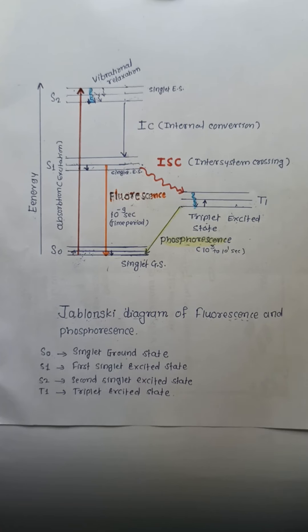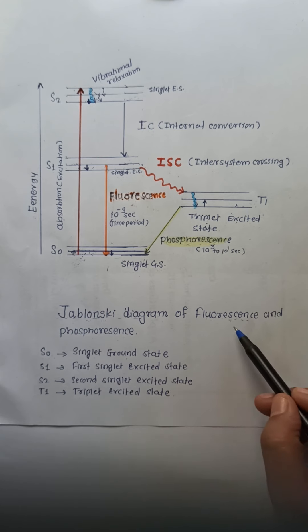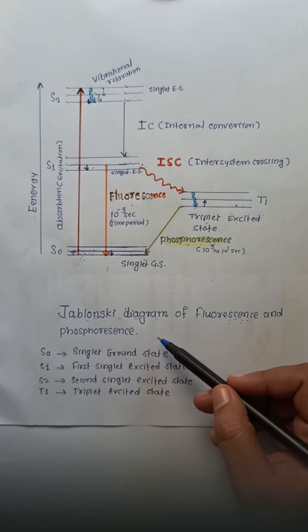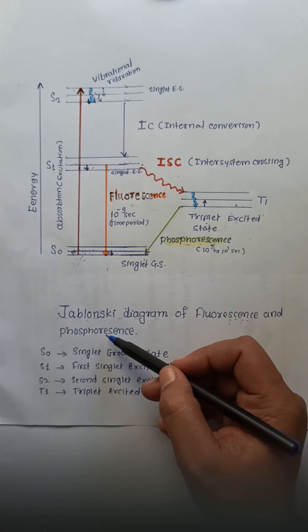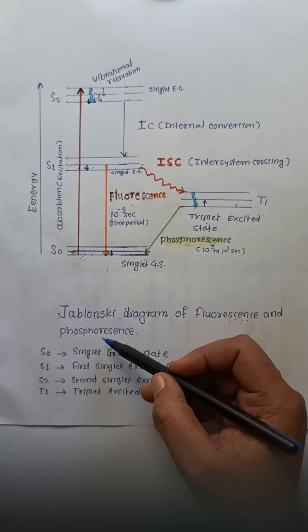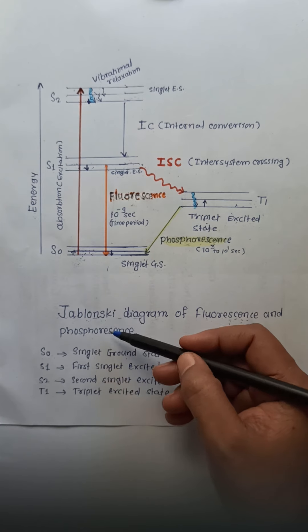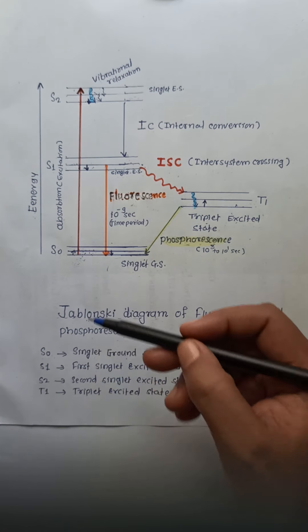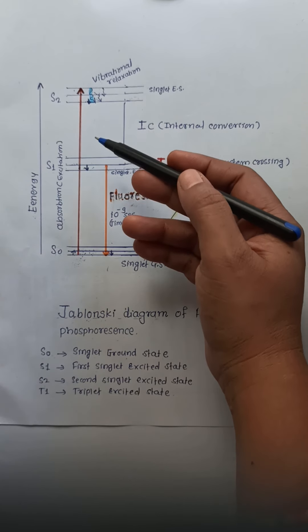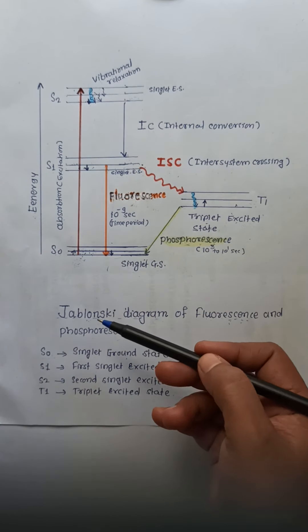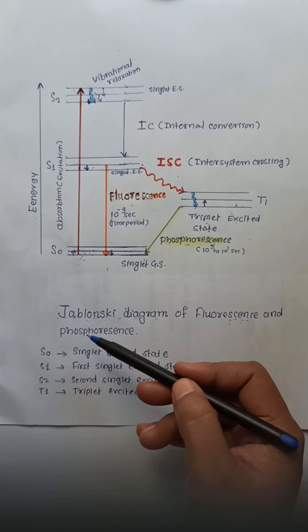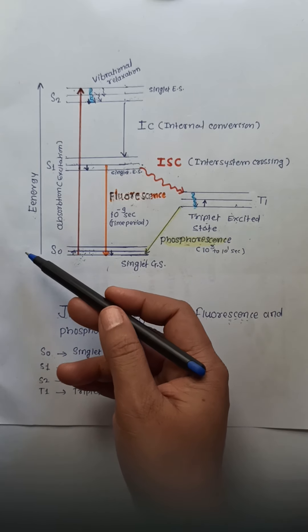Hello students. In this lecture we are going to study about the Jablonski diagram of fluorescence and phosphorescence. In molecular spectroscopy, a Jablonski diagram is a diagram that illustrates the electronic states of a molecule and transitions between them. It is an energy diagram arranged with energy on the vertical axis.